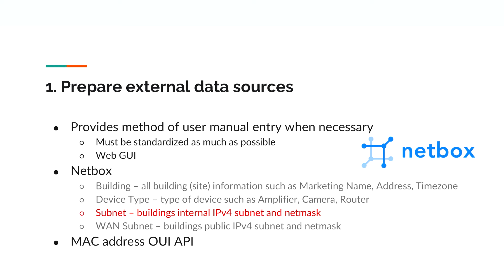Step one: prepare external data sources. Some method of manual entry was necessary for updating reference data as well as providing information when there is an anomaly. The condition for manual entry is that it must be as standardized as possible and available with a web GUI. One example of a good manual entry system is NetBox, which allows for all building information to be entered.